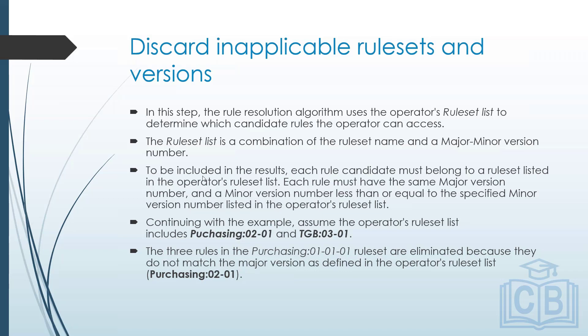Additionally, each rule candidate must have the same major version as specified, while the minor version can be less than or equal to the one on the operator profile. For example, the operator rule set list has two rule sets: Purchasing 02.01 and TGB 03.01. All rule candidates are compared against these two entries.